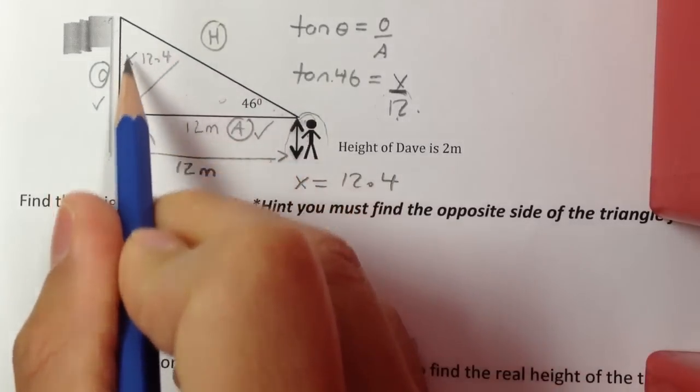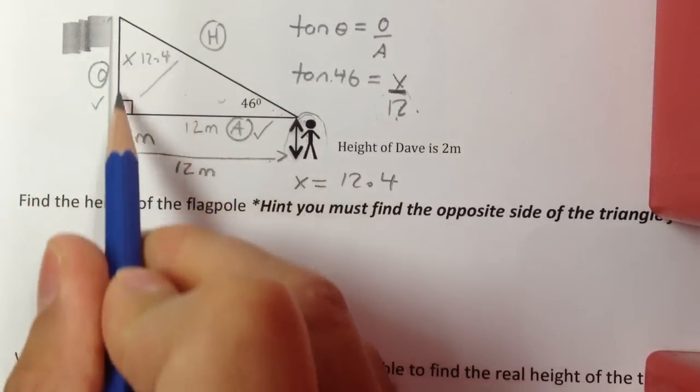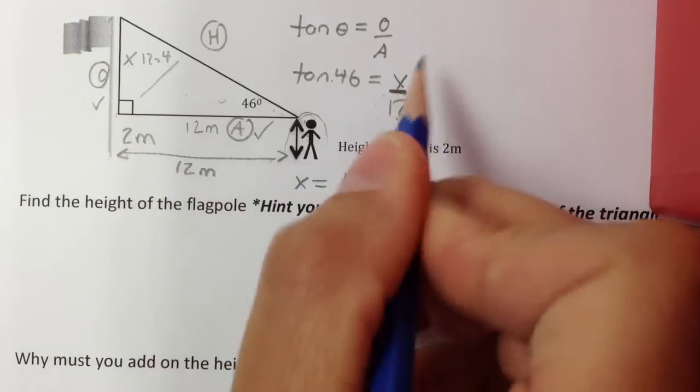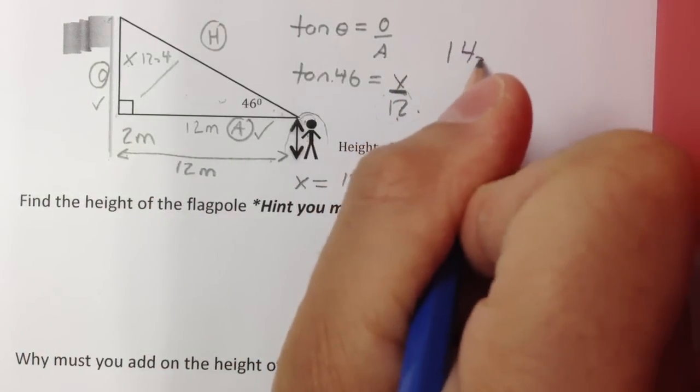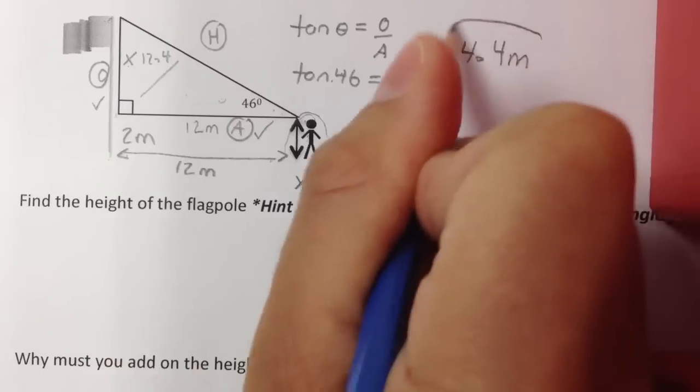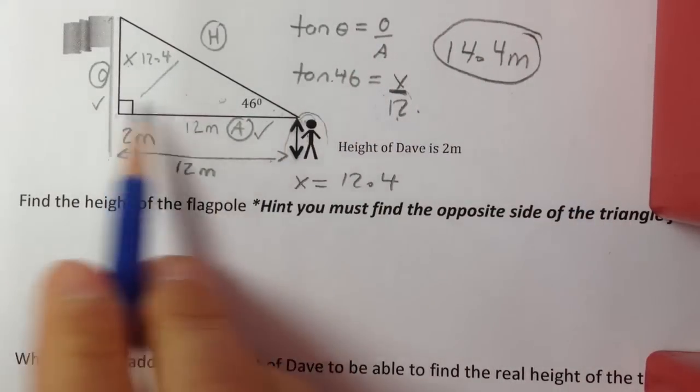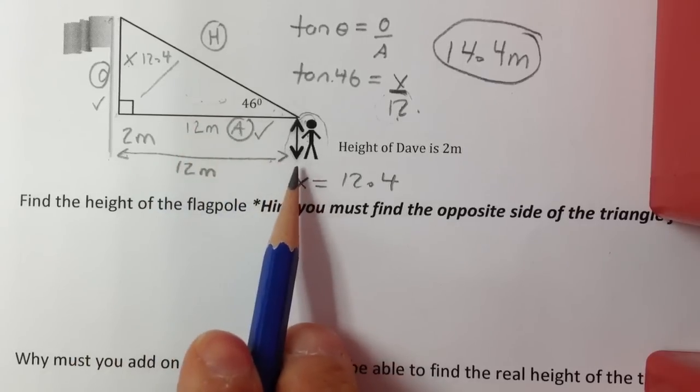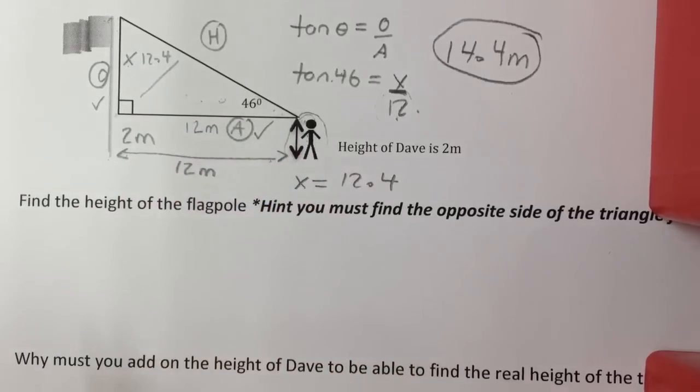So that means the height of the whole flagpole would be 12.4 for the triangle and the guy, which is 2 meters. So when you add those two together, you should get 14.4 meters. And that's the true height. So if you see questions where they have a person being drawn, it means find the triangle first and then add on the height of the guy at the end.